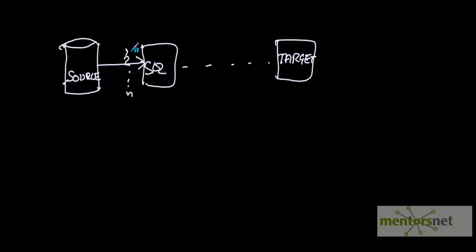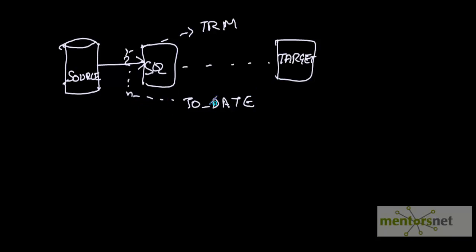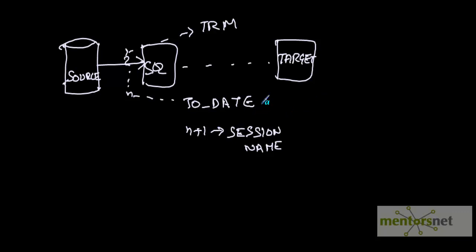Suppose I want to apply a trim function on a string column, or convert a character column, or apply a to_date function on a column, or add one more column — an n+1 column. I want to put my Informatica session name or some kind of identifier to identify that this record was loaded by a particular session or process. All this can be done using expression transformation, which Informatica provides for this kind of job.